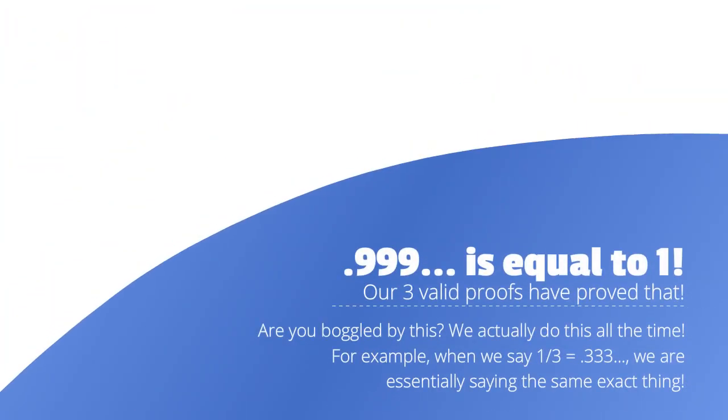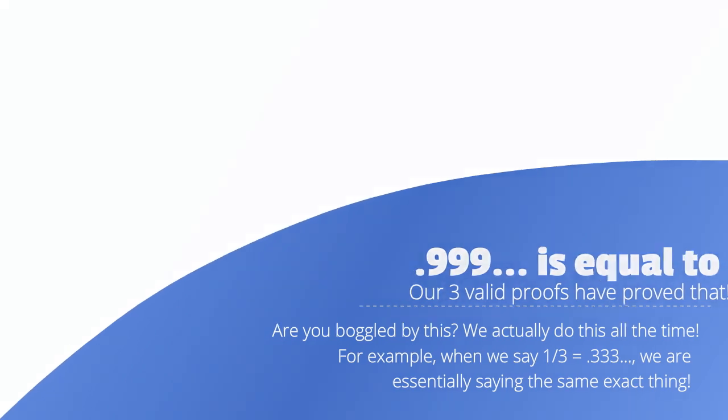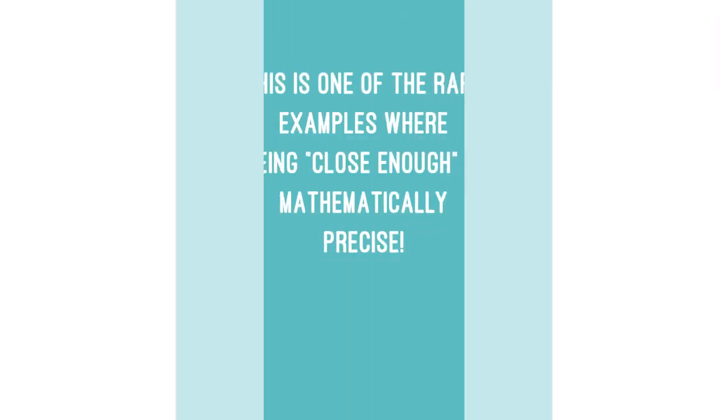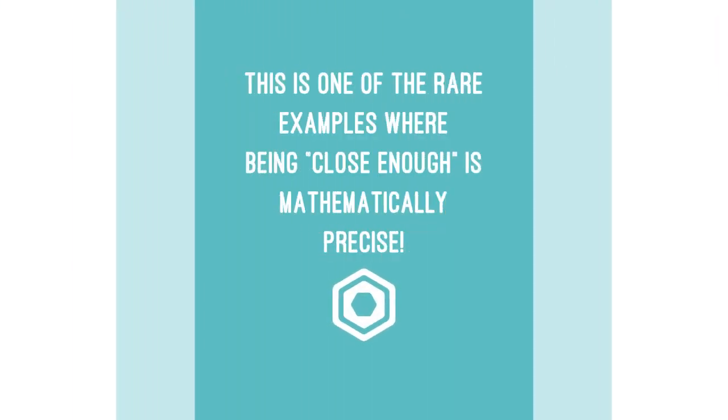0.9 recurring is equal to 1 or 3 valid proofs have proved that. Are you boggled by this? We actually do this all the time. For example, when we say 1 third is equal to 0.3 recurring, we are essentially saying the same exact thing. This is one of the rare examples where being close enough is actually mathematically precise.